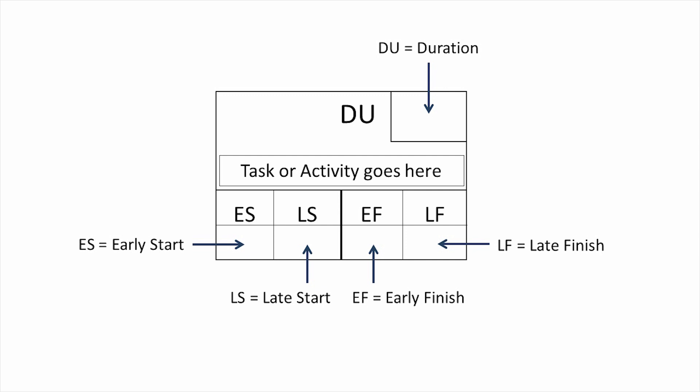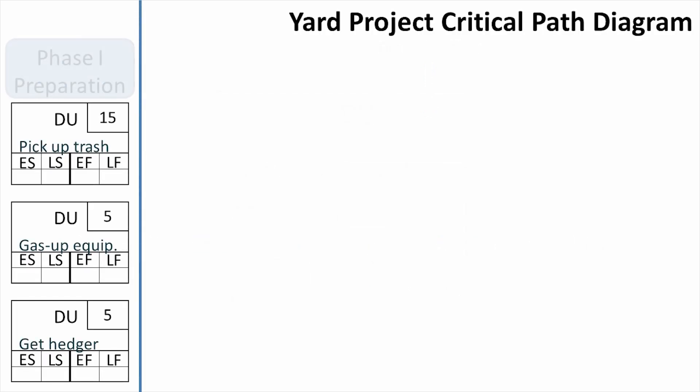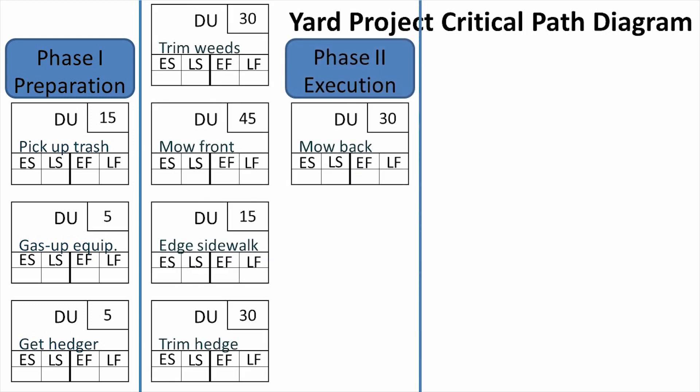We'll go over this in more detail in the next lesson. We can look at this project as having three phases: the preparation phase, the execution phase, and the cleanup phase. The preparation phase involves picking up the trash, putting gas in the equipment, and getting out the hedge clipper. In between is where the bulk of the work is performed — the execution phase — during which I would mow the front and back lawn, trim the weeds, edge the lawn, and trim the hedge.